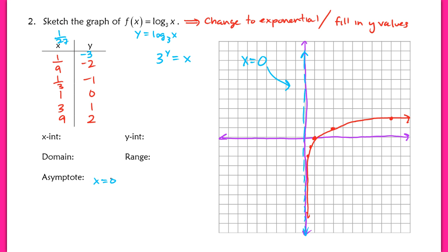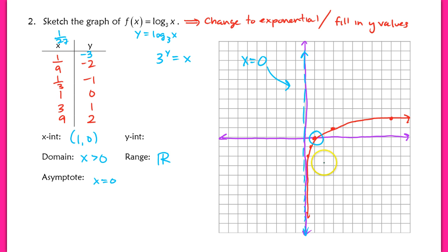The asymptote is at x equals 0. The domain here is a little different: the x values will never be negative. No matter what I plug in for y, the x outputs are always positive. For our range, the y outputs can be any number, so they're all reals. We do have an x-intercept this time at (1, 0) — it clearly crosses the x-axis. There is no y-intercept, though, because it never hits the line x equals 0, so it does not exist.